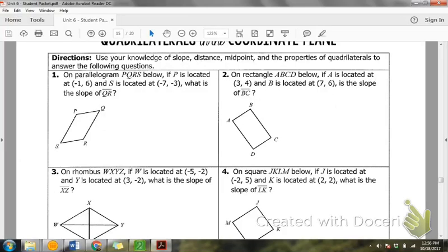So if I'm looking at number 1, it says on parallelogram PQRS, P is located at negative 1, 6. So let's go ahead and draw that. Let's write that next to P, negative 1, 6. And S is located at negative 7, negative 3.